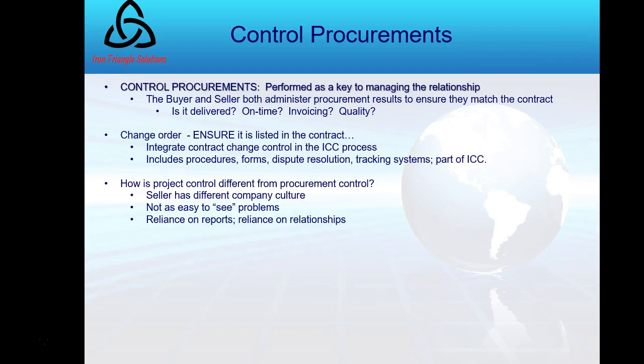Control procurement is key to managing relationships. As the buyer project manager, both the buyer and seller administer the procurement relationship to ensure the contract is matched: Is the product delivered? Is it on time? What about invoicing requirements, quality standards, and inspections?